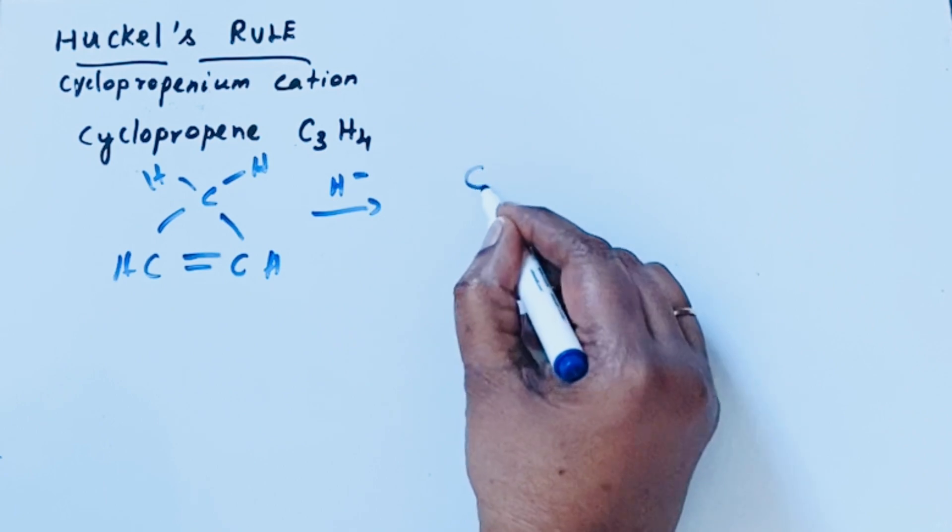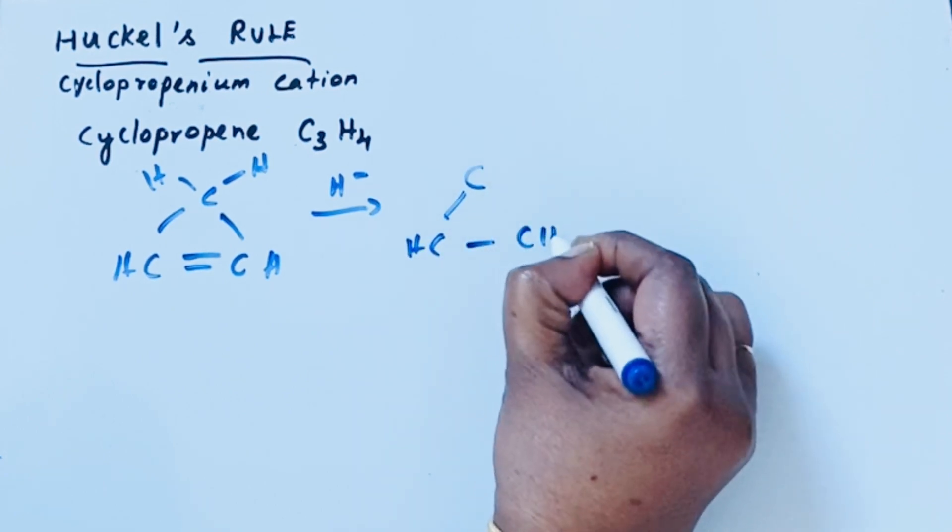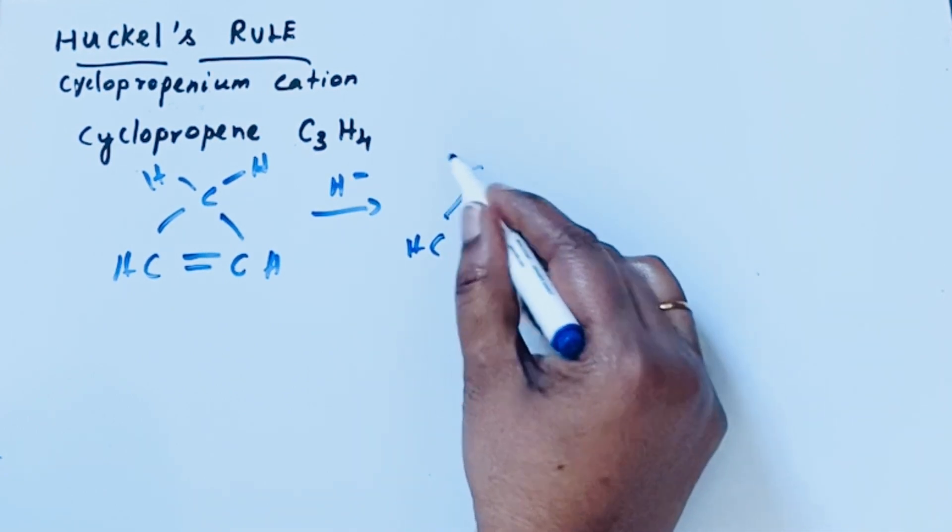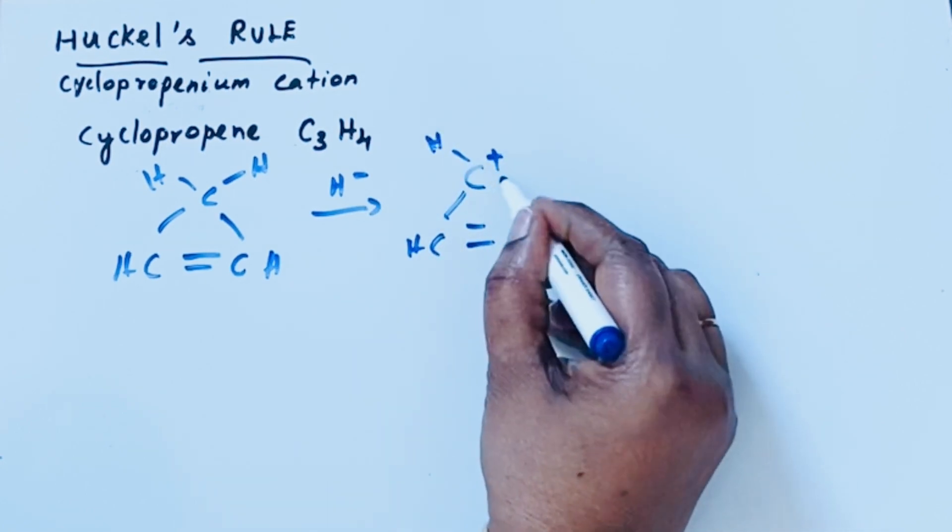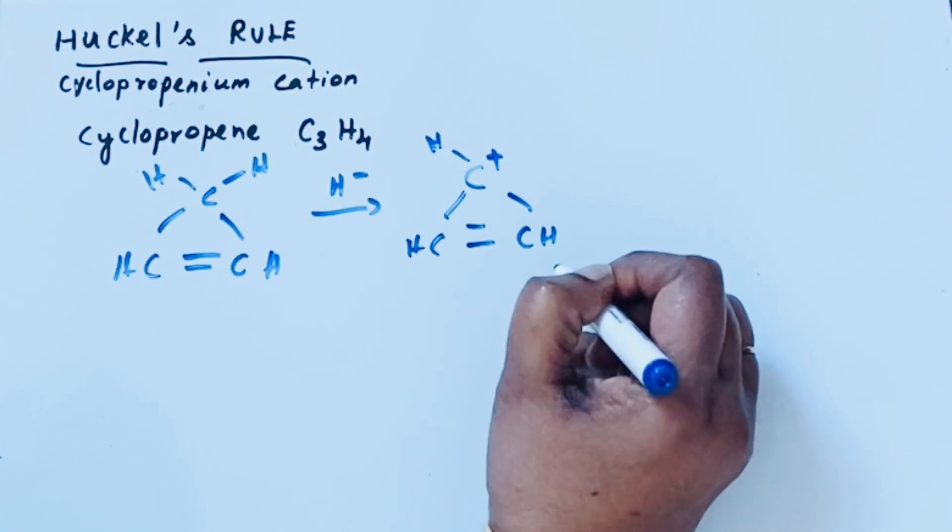So let us draw: CH, CH double bond. Here H, because of that now a plus charge is formed. So this is cyclopropenium cation.